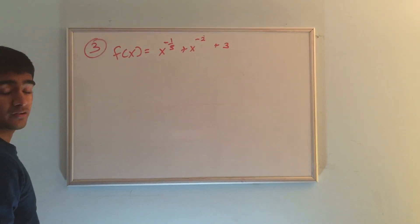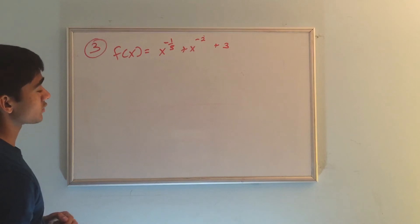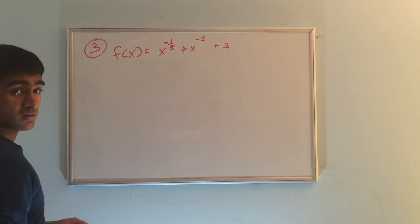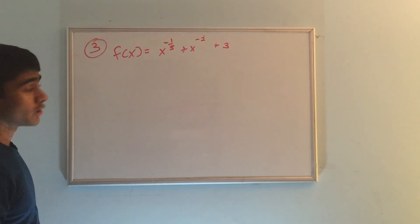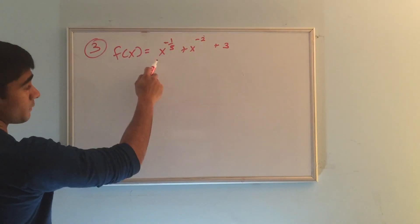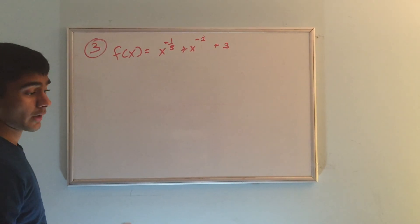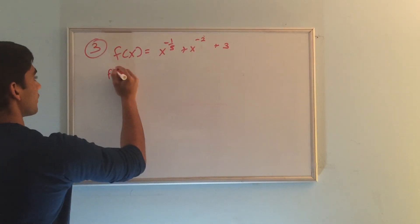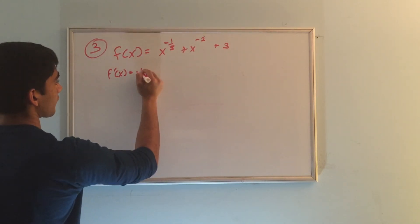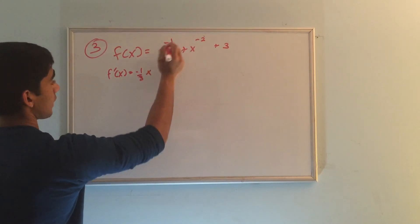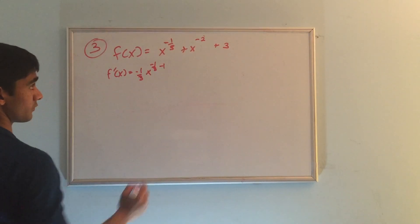The next problem is a little bit trickier, but still manageable. It reads: f of x equals x to the negative 1 third power, plus x to the negative 2nd power, plus 3. Again, we notice a variable base x raised to a constant power and a constant, so we need to use the power rule. For f prime x, for the first term we bring down the negative 1 third and keep the x, subtracting 1 from the exponent.